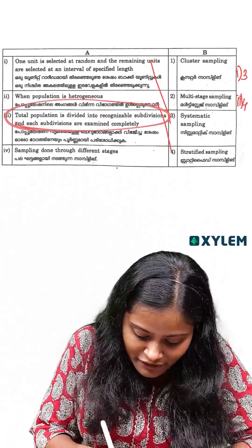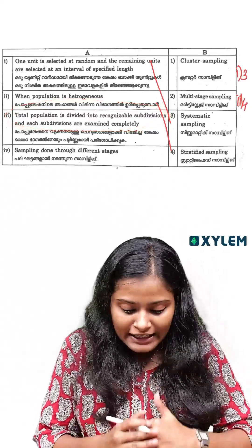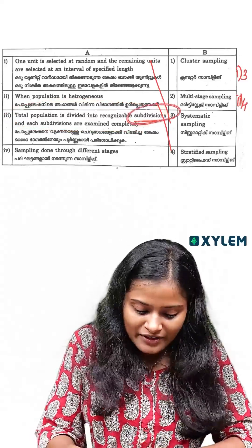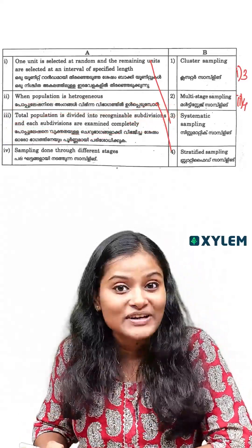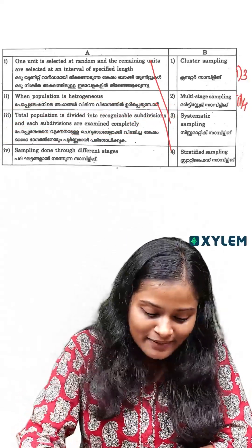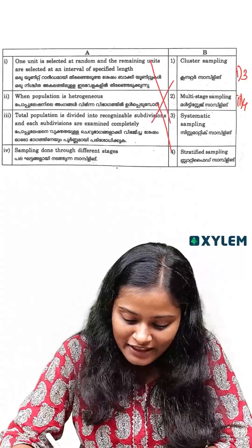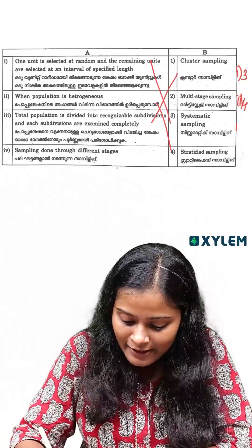The total population is divided into recognizable subdivisions and each subdivision is examined completely. This method is called cluster sampling.